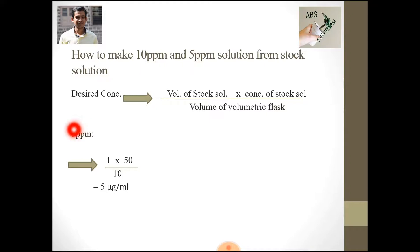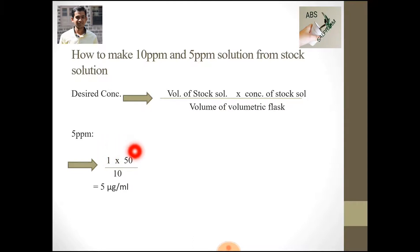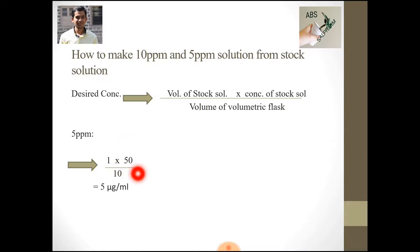To make a 5 ppm solution from the 50 ppm stock solution, I pipette out 1 ml of stock solution at 50 ppm concentration and dilute it to 10 ml using a 10 ml volumetric flask. This gives 5 micrograms per ml, or 5 ppm.